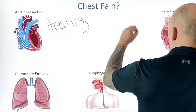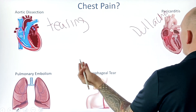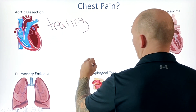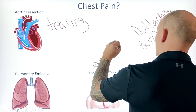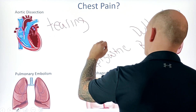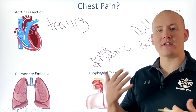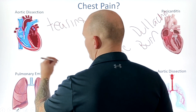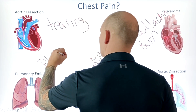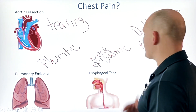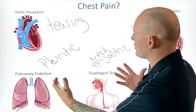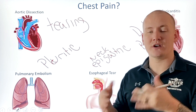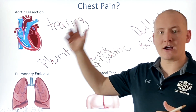Pericarditis is more of a dull ache, and sometimes even a burning sensation. Esophageal tears can present as epigastric pain or even neck pain, depending on where the tear is located — but it's still in the mediastinum and chest region. Pulmonary embolisms present with more pleuritic pain, as do tension pneumothoraces. There are many different descriptors we should be listening for that may push us toward a high index of suspicion for one of these other emergencies rather than a myocardial infarction.